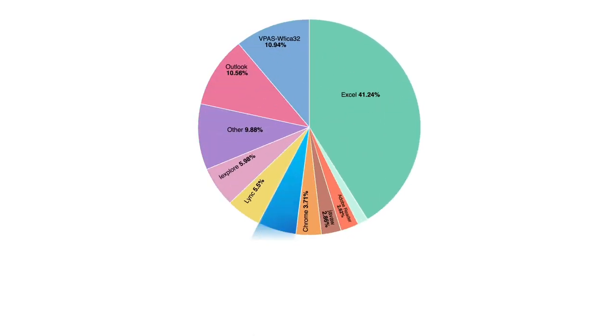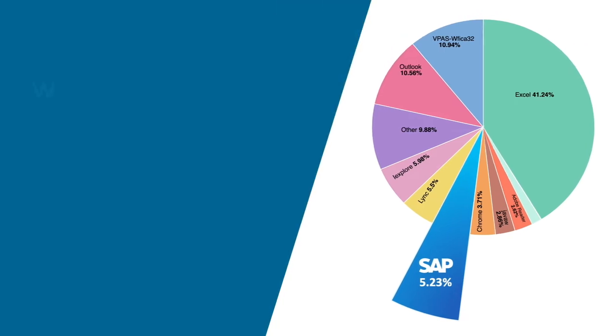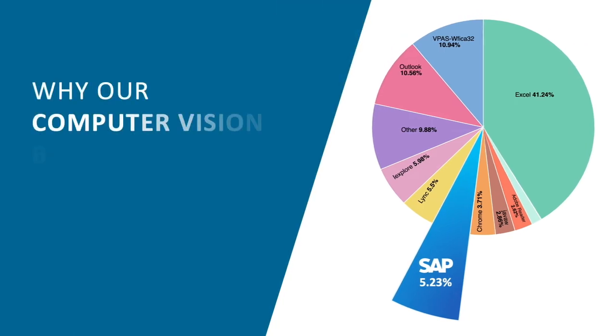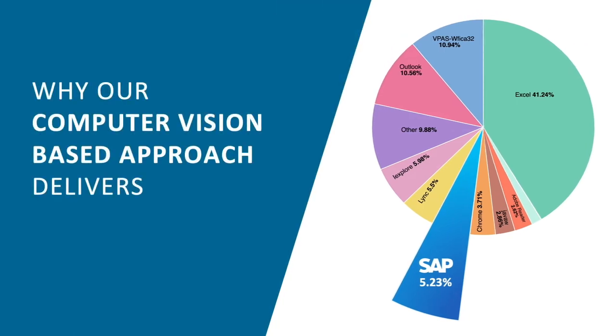So how does this look in real life? This is a great example of one of our customers, a global 100 CPG company. We took a look at what was supposed to be a financial process executed in SAP, but as you can see, it isn't anything but. If we're really looking to solve a process problem, we need to be able to look beyond one application and get a true end-to-end view.